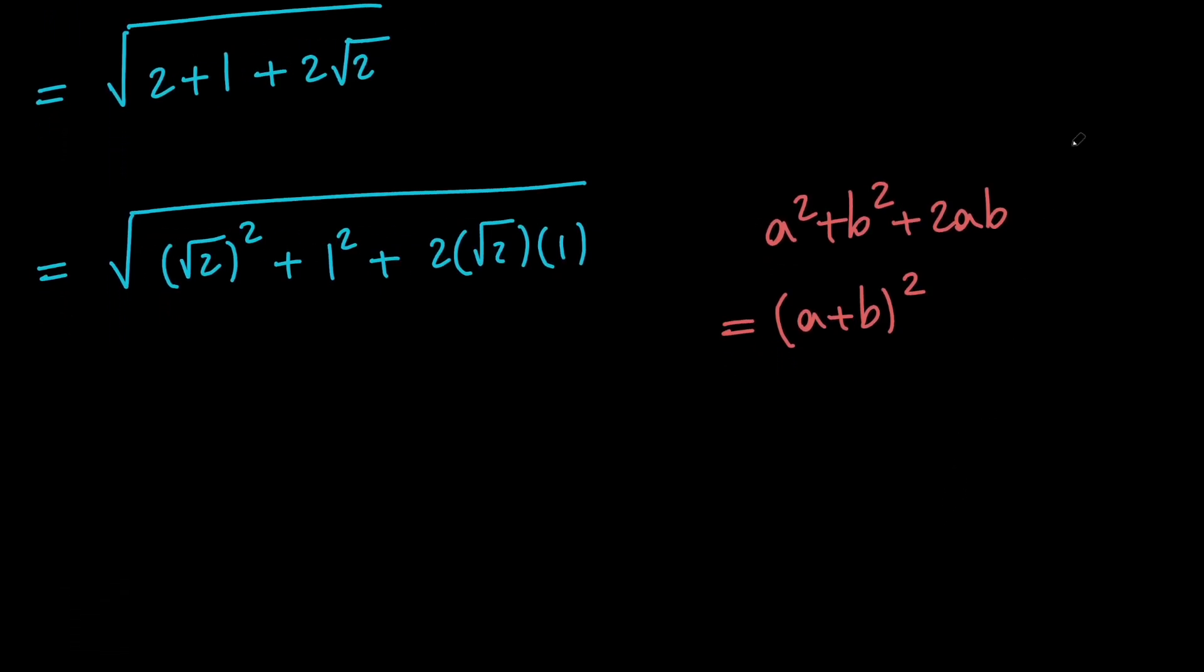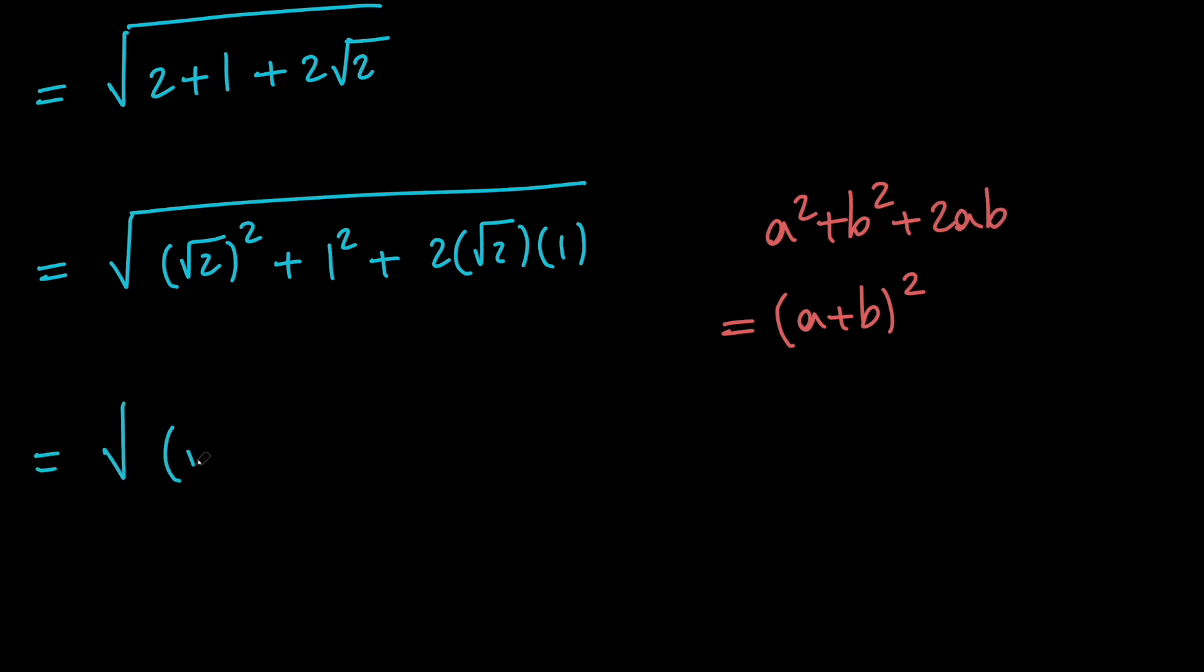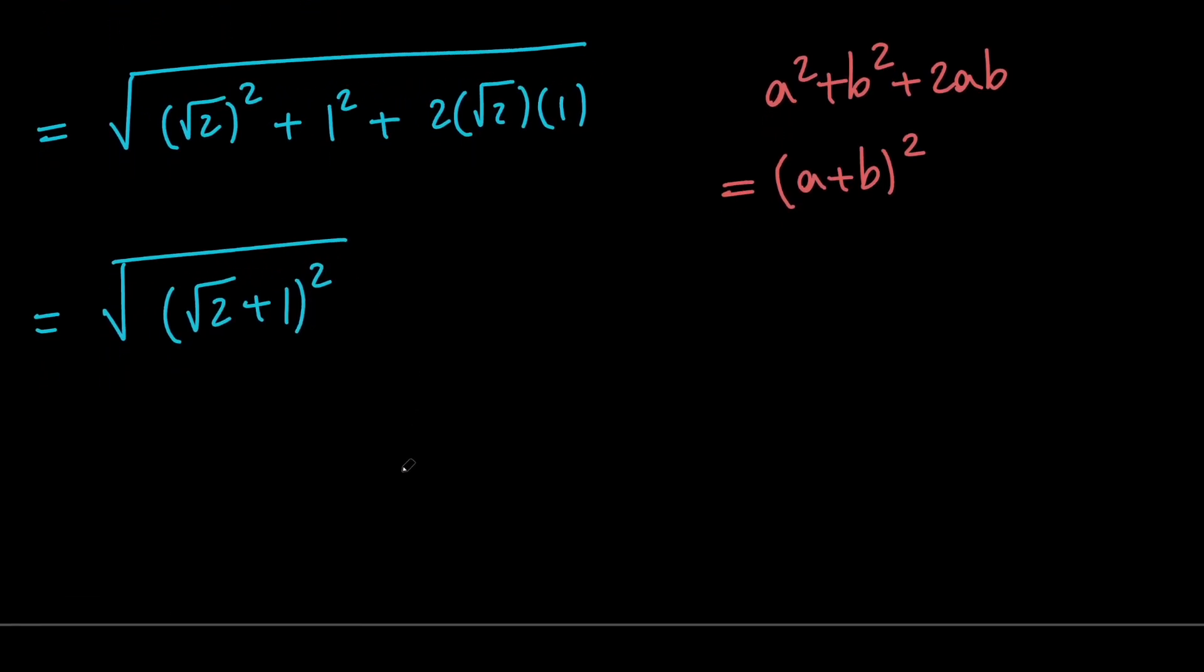So I can say that we have the square root of root 2 plus 1 all squared. And then since we have the square root of some expression squared, we're going to get the absolute value of that expression, which is the absolute value of root 2 plus 1. And since root 2 plus 1 is positive, we get the square root of 2 plus 1.